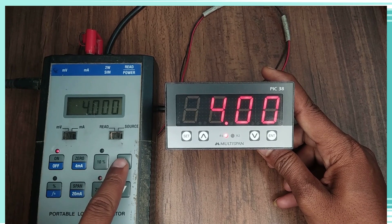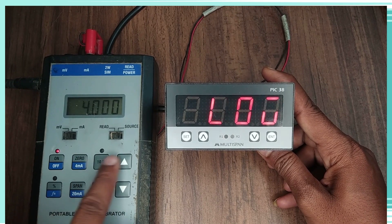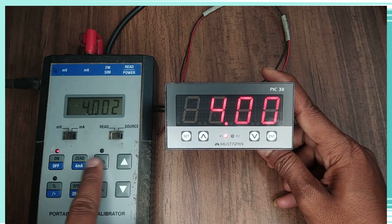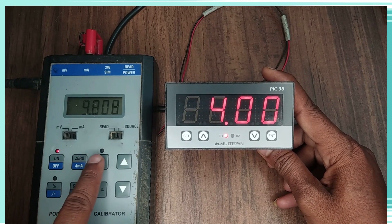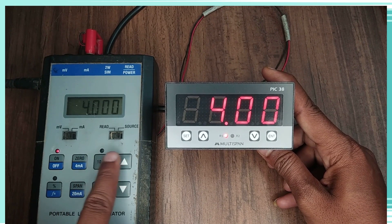In this you can see on the left side we have source and on the right side we have PIC38 of Multispan. And we can clearly see that on the source we can change the inputs and on the PIC it will change.